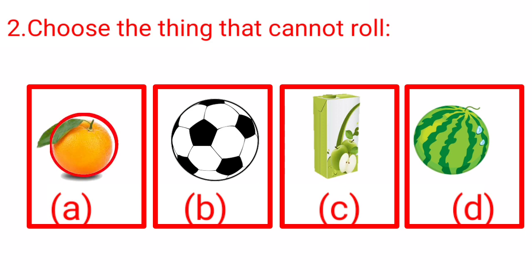Option A is an orange. It is similar to a ball. It can roll. Option B is a football. It also looks like a ball and it can roll. Option C, look at option C. It is a juice pack. It is not similar to a ball, so it will not roll. Option D is a watermelon which is similar to a ball and will definitely roll.